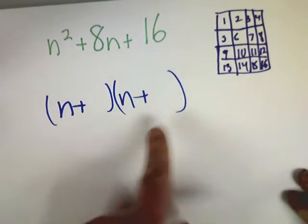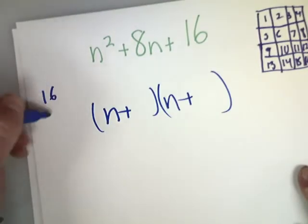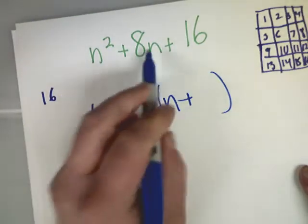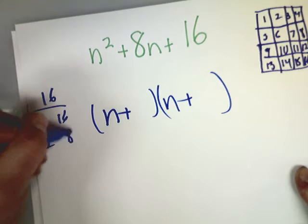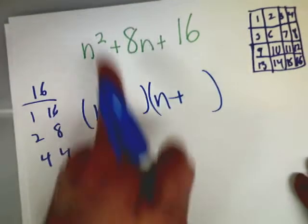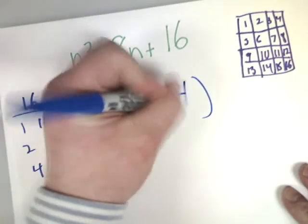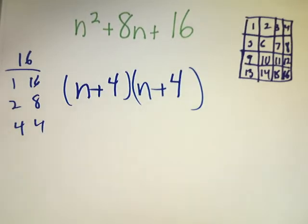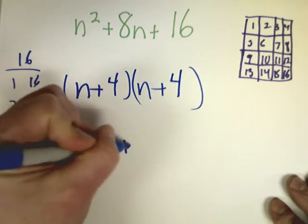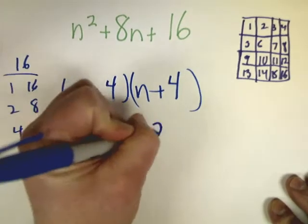Now, from here, I'm going to do a factor list for 16, and since these are the same, I'm going to look to find something that adds up to 8. So I've got 1 and 16, 2 and 8, 4 and 4. Well, 4 plus 4 is 8. You will notice that n plus 4 and n plus 4 are the same thing.